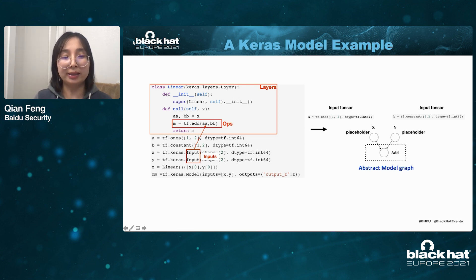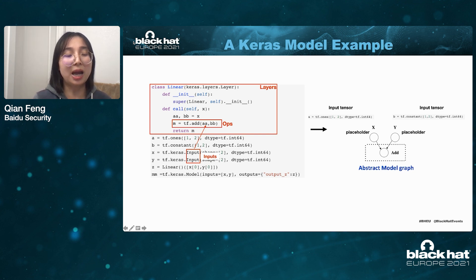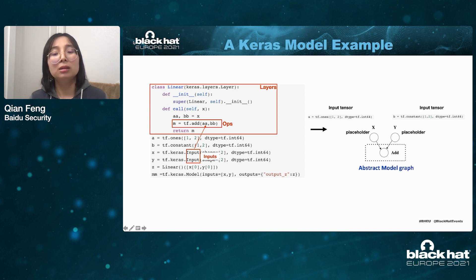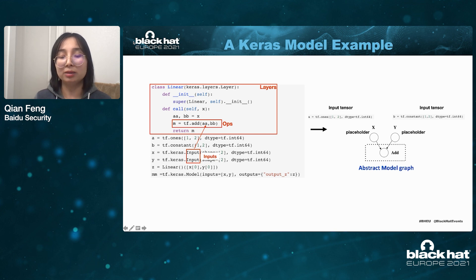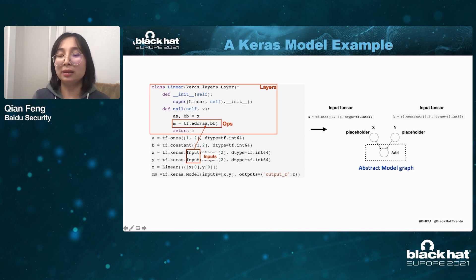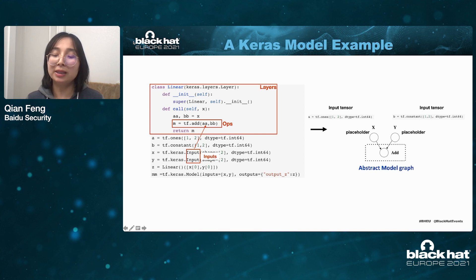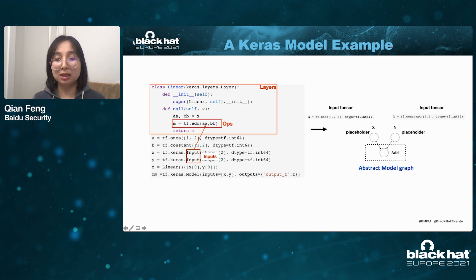Let's use the CARS model to demonstrate our idea. Here is one example. On the left side, written in Python, we conduct an add operator on two input tensors. On the right side is the model graph. Since the original model graph is a bit large, we use an abstraction to demonstrate. On this graph there are nodes and edges — the node is the operator and the edge is the tensor. The add operator takes two tensors from the placeholder, and the placeholder accepts input tensors for the add operation.